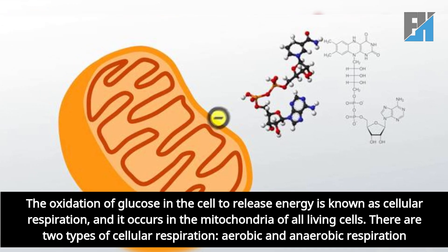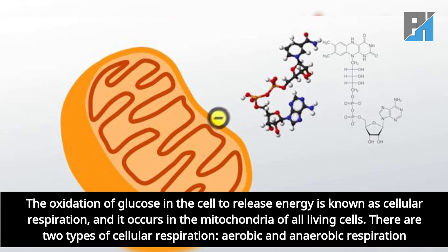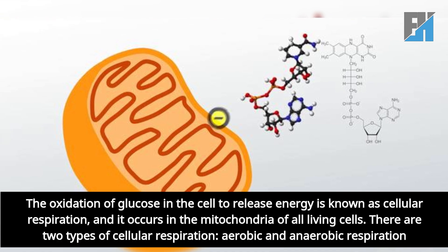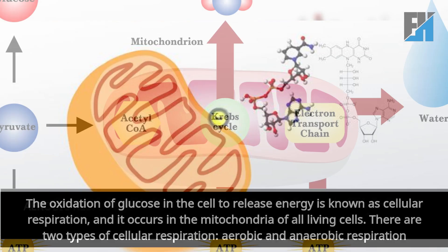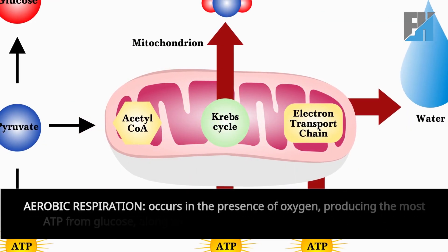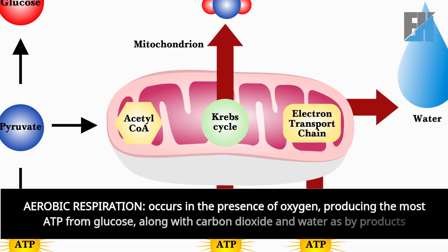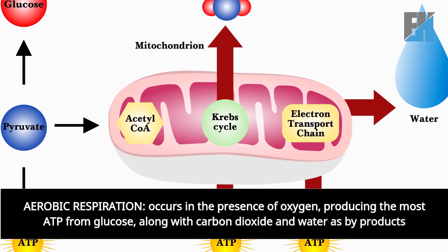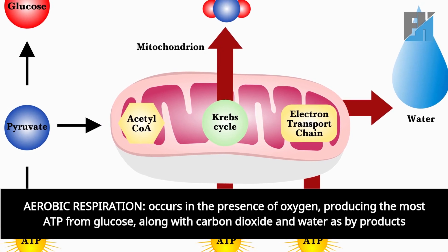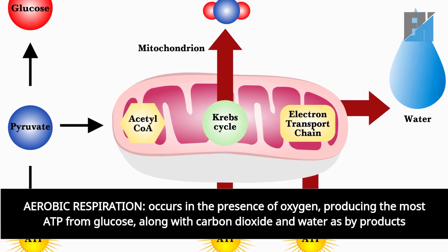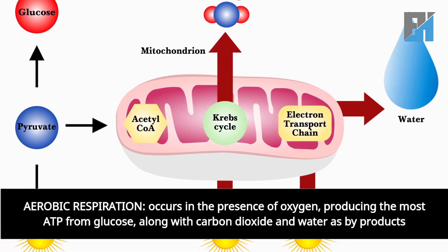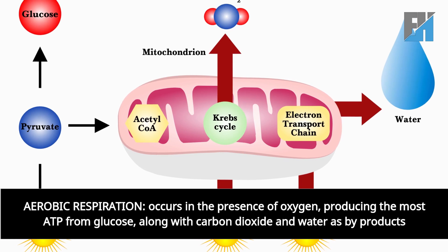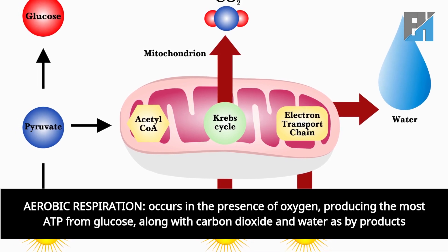There are two types of cellular respiration: aerobic and anaerobic respiration. Aerobic respiration occurs in the presence of oxygen, producing the most ATP from glucose, along with carbon dioxide and water as byproducts.